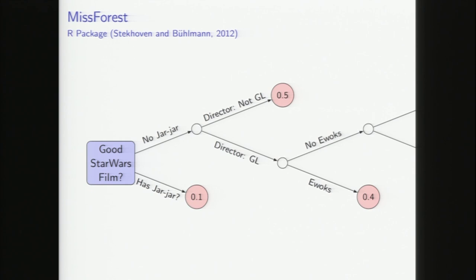So what do we actually do when we have missing data? We've established that complete case analysis is not good, and that mean or mode imputation could bias our data. A great package is called MissForest — it's an R package that's been around for quite a while and is essentially state of the art for missing data imputation. As you can guess, it's based on random forests.